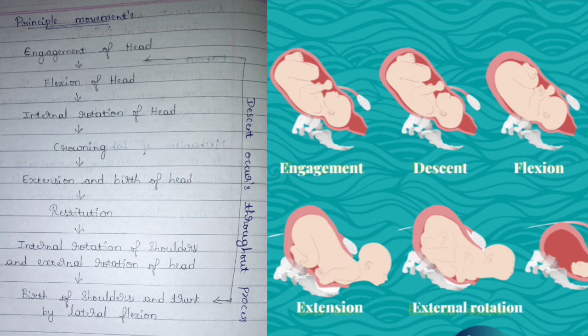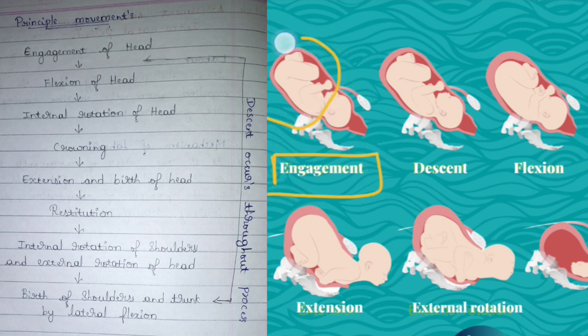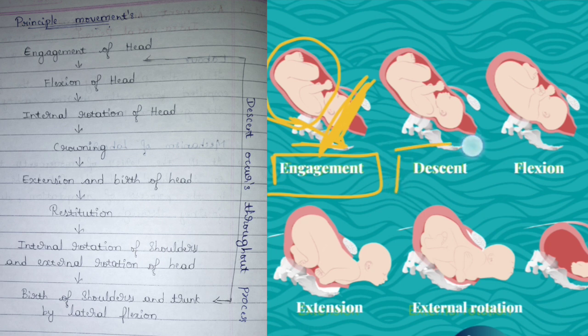Principal moments are the steps undergone by the fetus during labor. The first step is engagement. Generally the baby stays in the womb, but at the time of delivery the baby comes down and the baby's head is engaged in the process. This step is known as engagement of the head and is the first step in labor.